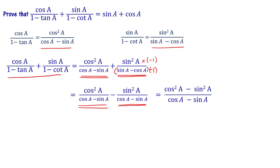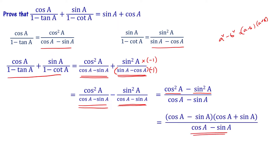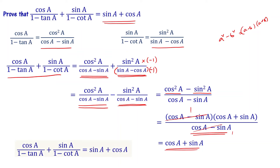Now the numerator is cos squared A minus sin squared A divided by cos A minus sin A. Applying the difference of squares formula, a squared minus b squared equals (a minus b)(a plus b), the numerator becomes (cos A minus sin A)(cos A plus sin A). The cos A minus sin A cancels with the denominator, leaving cos A plus sin A. This equals the RHS, sin A plus cos A. Therefore, cos A divided by 1 minus tan A plus sin A divided by 1 minus cot A equals sin A plus cos A. Proved.